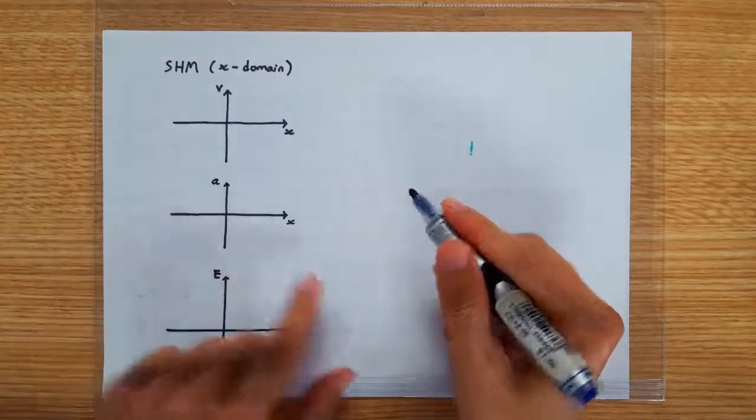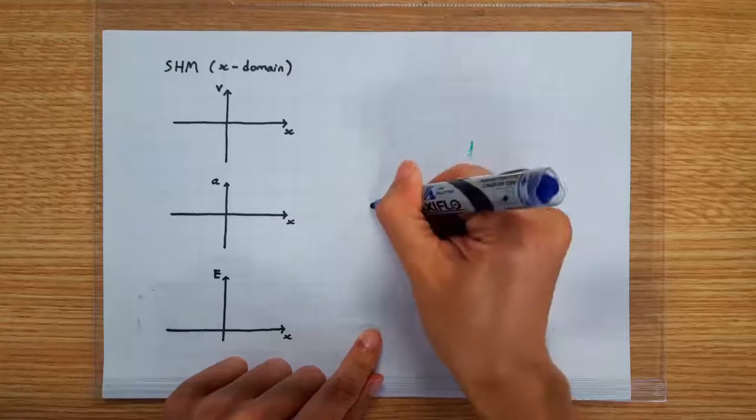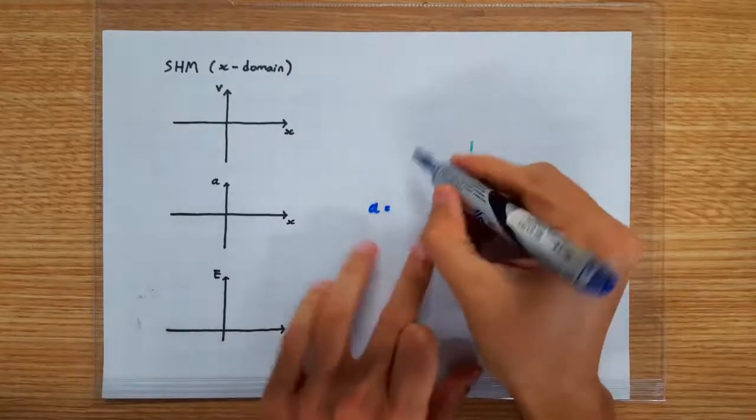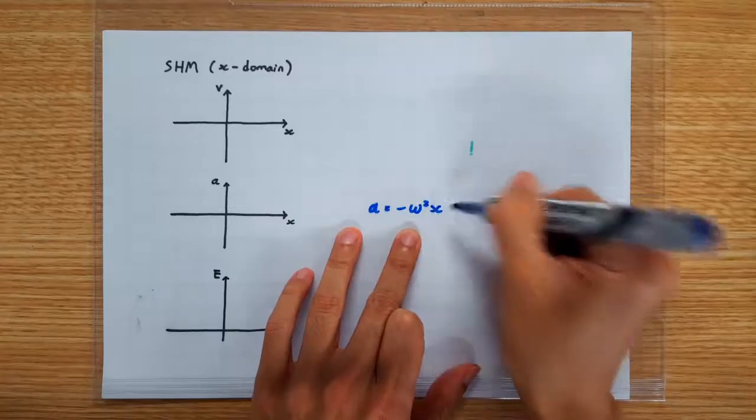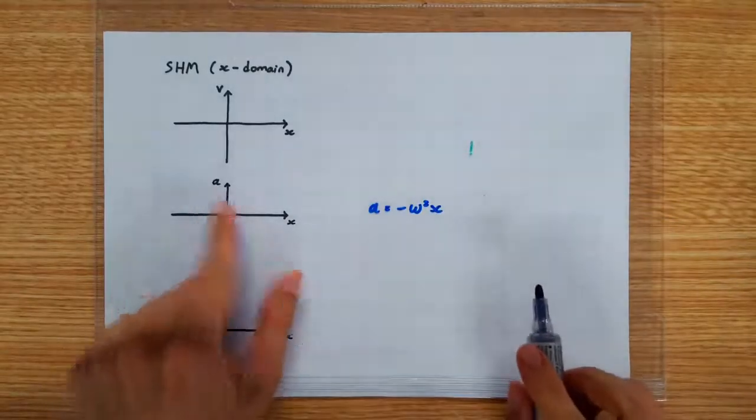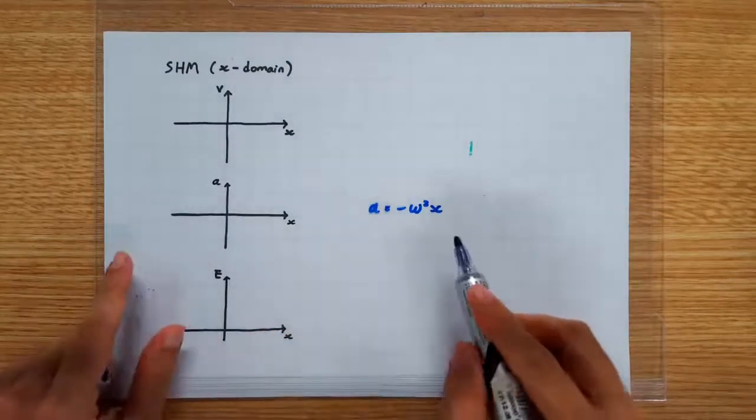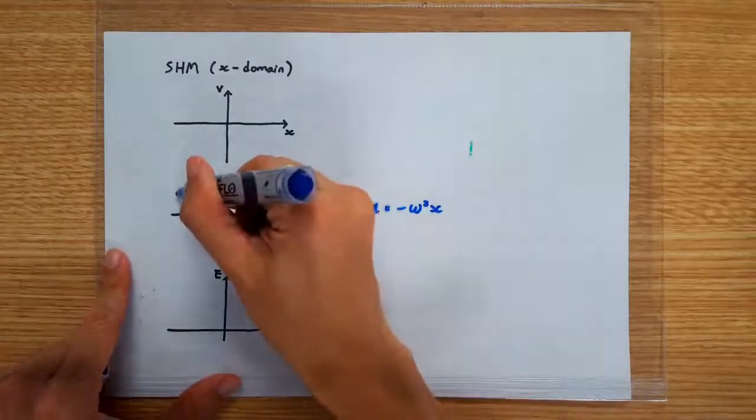We'll start off with the AX graph. We already know that for an SHM, acceleration is negative omega square X. So the AX graph is clearly going to be a straight line graph with a negative gradient.